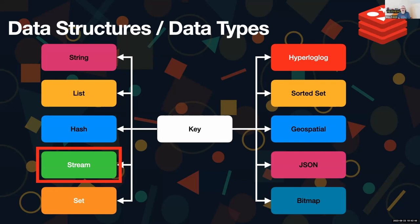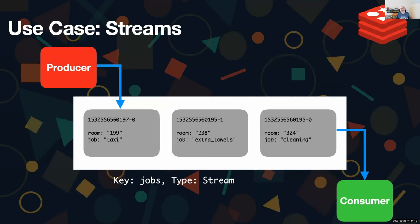The one we're going to look at today - because it's interesting for data acquisition in small devices - is the stream data type. If you've worked with Apache Kafka, there are a lot of similar concepts here, though the two things are not equivalent. The idea of a Redis stream is that we link producers with consumers with a sort of buffer in between. The example we're going to look at is one I use at conferences: a stream that handles front desk and room service jobs in a hotel. Here we have a producer creating jobs and putting them into the stream, and a consumer reading from that stream and doing the work.